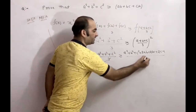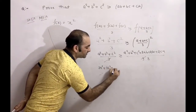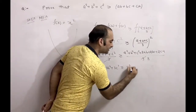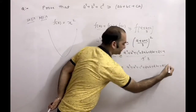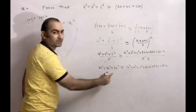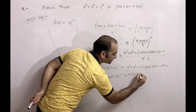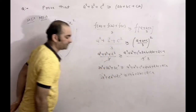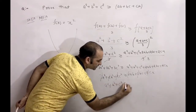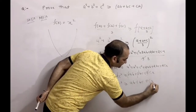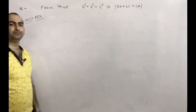So the inequality gives 3(a² + b² + c²) ≥ a² + b² + c² + 2ab + 2bc + 2ca. This simplifies to 2a² + 2b² + 2c² ≥ 2ab + 2bc + 2ca. Dividing by 2: a² + b² + c² ≥ ab + bc + ca. This is proved. Now Method 2: AM-GM.